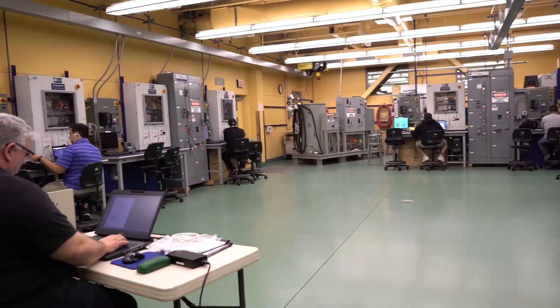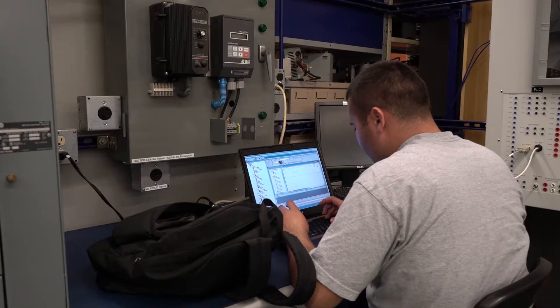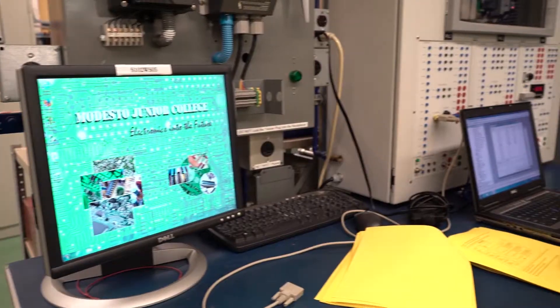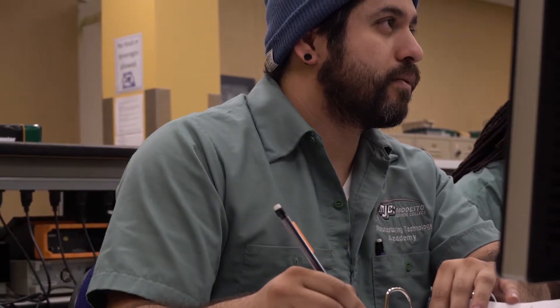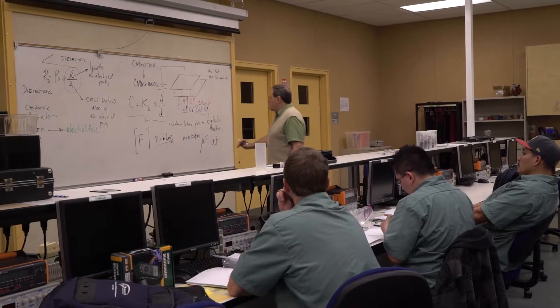My name is Steve Scorsotti and I'm an adjunct professor here in the industrial electronics department. It's a two-year program start to finish. If they complete the technical educational classes they will get a certificate. If they also take the prerequisite general ed, they can actually earn an AS degree in industrial electronics.